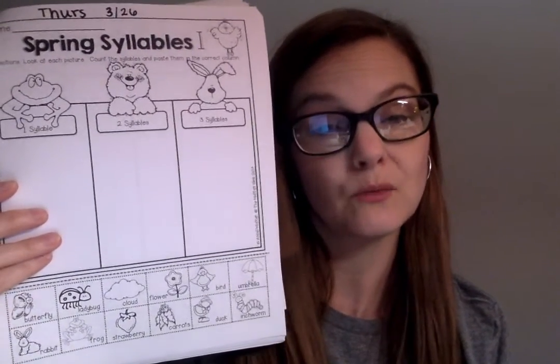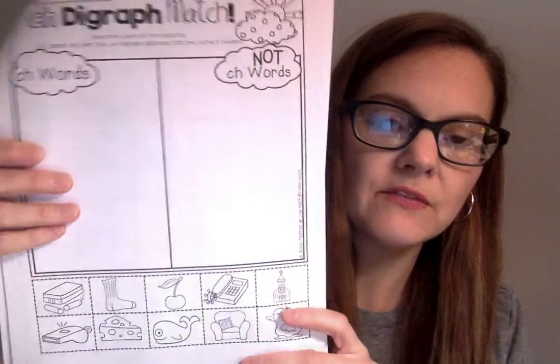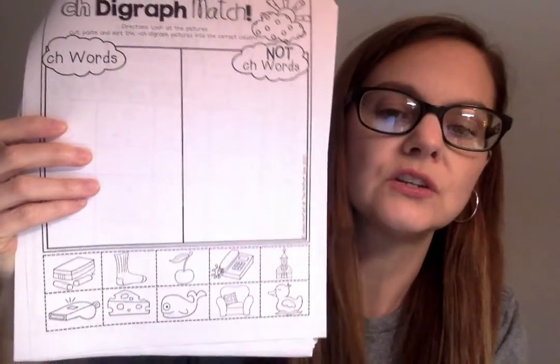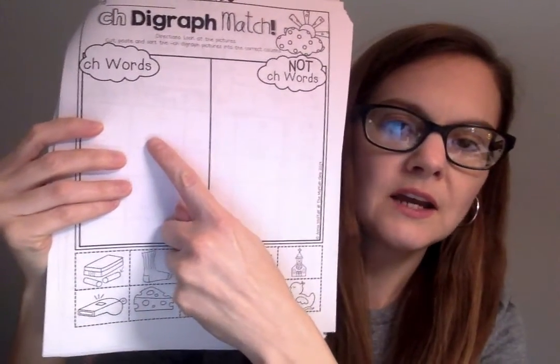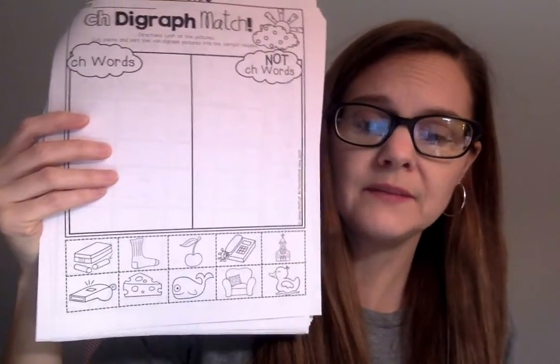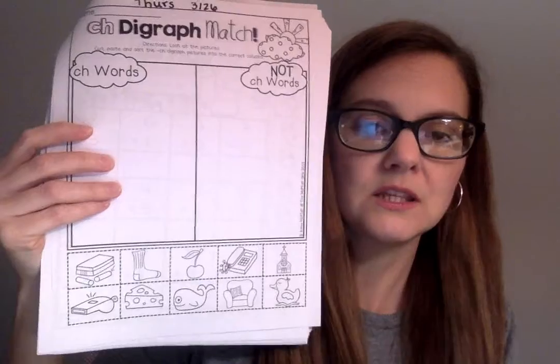Cloud — remember, one-syllable words are the trickiest. You don't say 'clout-out,' it's not two syllables — cloud is one syllable. You've got to be super careful with those. Then there's the CH digraph match. CH says 'ch' as in 'chin,' so you're going to put CH words on one side and words that are not CH words on the other side.